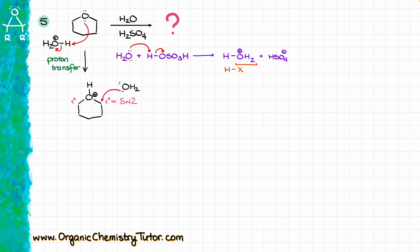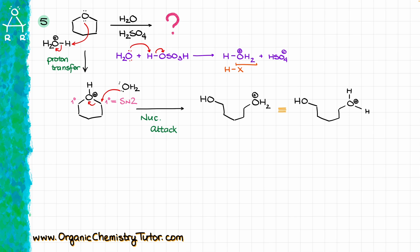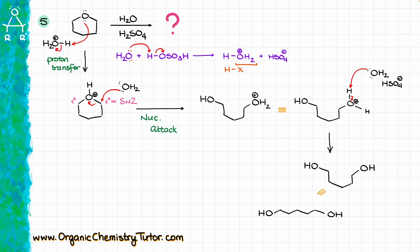Water comes in and opens up the ether via SN2, giving an intermediate where H₂O is now attached. That intermediate needs to be neutralized, so another equivalent of water — or the conjugate base HSO₄⁻ from sulfuric acid — comes in and deprotonates the intermediate, giving the final neutral product. Drawn in zigzag form, the product has five carbons — carbons 1, 2, 3, 4, 5 — with an OH on each end, confirming no carbons were missed.